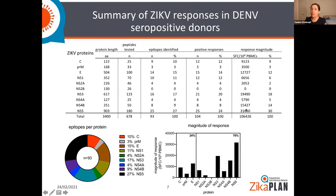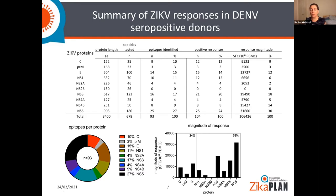Different proteins show different response levels: some are recognized very strongly, while NS2a, for example, is recognized rather weakly. Plotting epitopes per protein against magnitude of response, you can see that the strongest responses — and also the majority of responses — are against proteins that are conserved between flaviviruses. NS3 and NS5 are highly conserved not only between different serotypes of dengue but also between dengue and Zika. Not surprisingly, this is where we found the majority of cross-reactive responses.